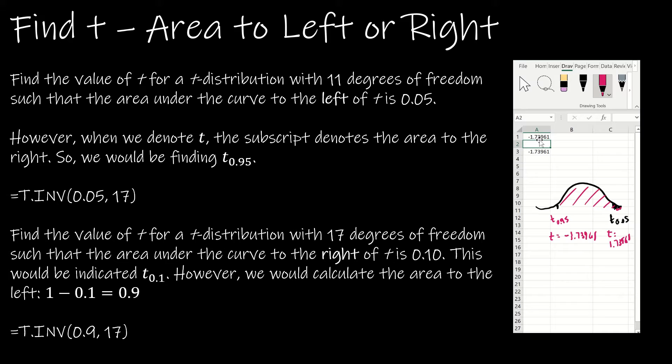If we're looking for the value of a t-distribution with 17 degrees of freedom such that the area under the curve to the right of t is 0.1—so again that's going to be denoted t_0.1—but remember in Excel we need the area to the left. So if there's 10 percent to the right there's 90 percent to the left. So that's what I'm going to use: T.INV and then the 90 percent to the left and the degrees of freedom is 17. And that's going to give me my solution.